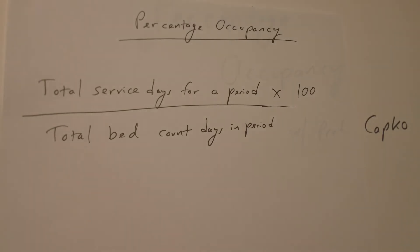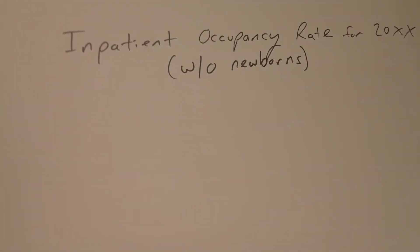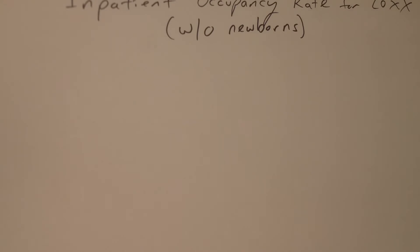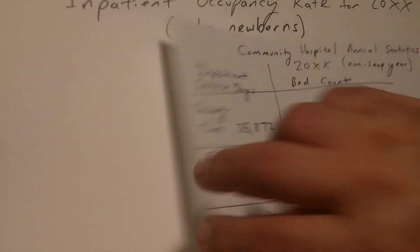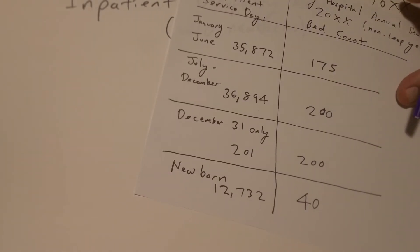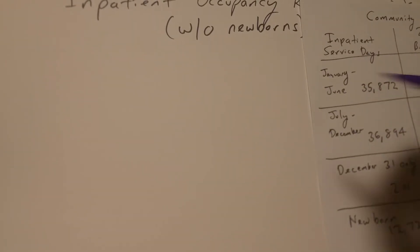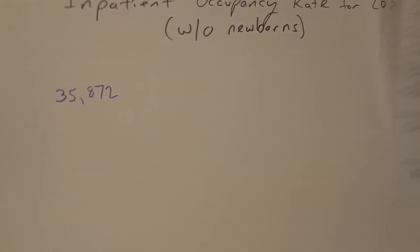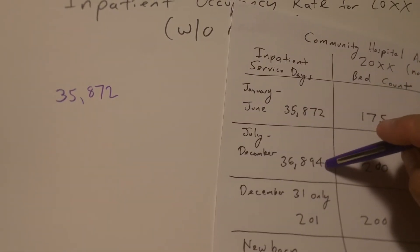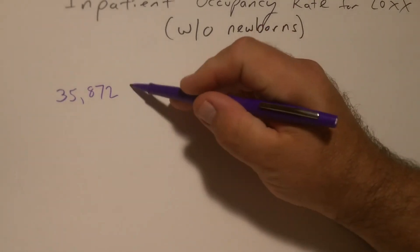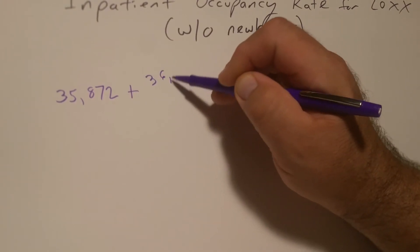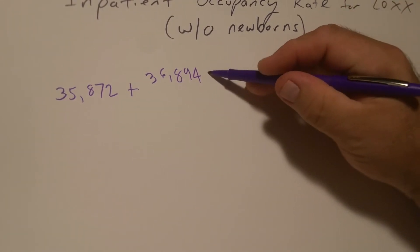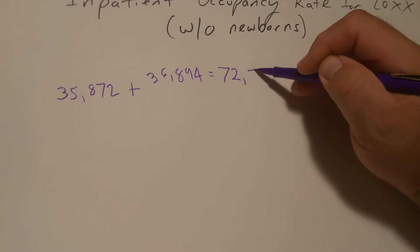Let's do the first one: inpatient occupancy rate for our year, and this is going to be without newborns. So we're going to put down some of this data. Looking at the first period, we have 35,872. Since we're looking for the entire year, I'm going to take the second period as well — 36,894 — and add that to it. Adding those two together, we get 72,766.